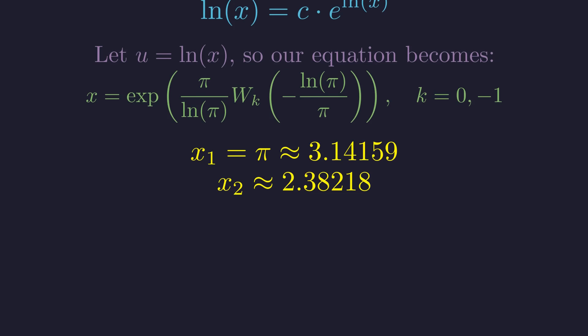Evaluating our Lambert W expressions numerically, the first solution with k equals 0 gives us pi, approximately 3.14159. The second solution with k equals negative 1 gives us approximately 2.38218.